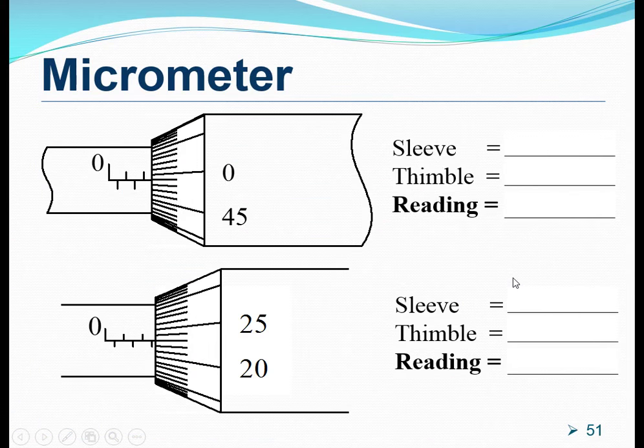So, let's have some practice. For this particular micrometer, if you look at the sleeve, the sleeve will give us the main scale reading. If this is the 0 marking on the main scale, this will therefore be 1 and 2 millimeters long. So, it is at least 2 millimeters long. We write this down as 2.00 millimeters.